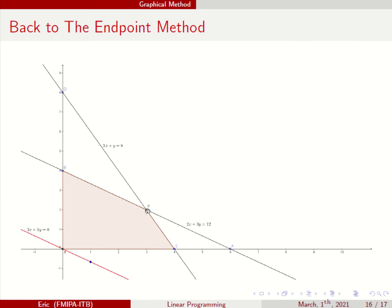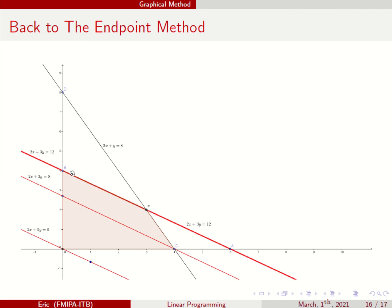What if the objective function is 2x plus 3y instead? So 2x plus 3y equals 0 gives you profit 0. You can change this to 2x plus 3y equals 8 — this is the profit when you pass through point C, so all of these points give you profit 8. And all of this line gives you profit 12.